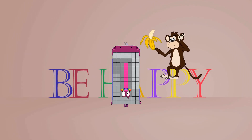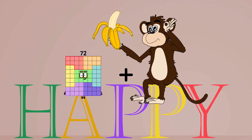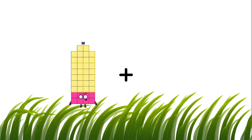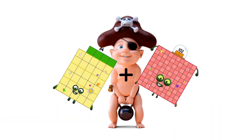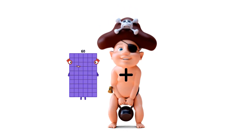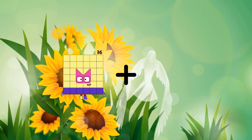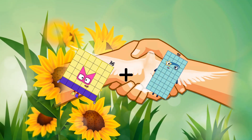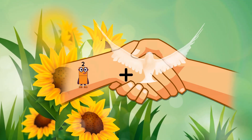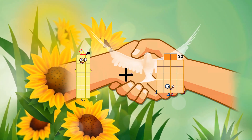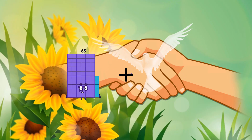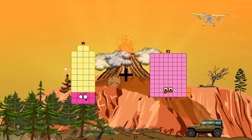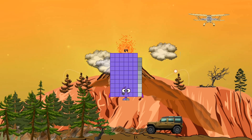94 equals 98. 72 plus 18 equals 90. 34 plus 102 equals 136. 36 plus 50 equals 86. 30 plus 31 equals 61. 38 plus 31 equals 69.